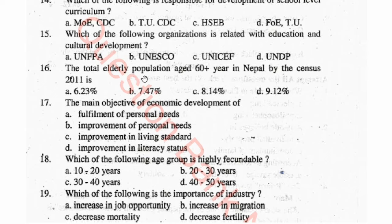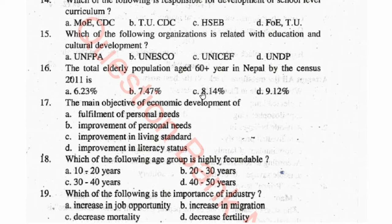Question 16: The total elderly population aged 60 plus in Nepal by the census 2011 is — options: 6.23 percent, 7.47 percent, 8.14 percent, 9.12 percent.